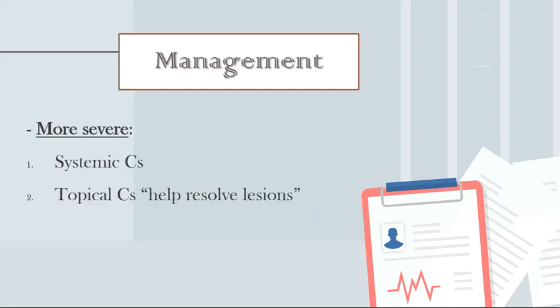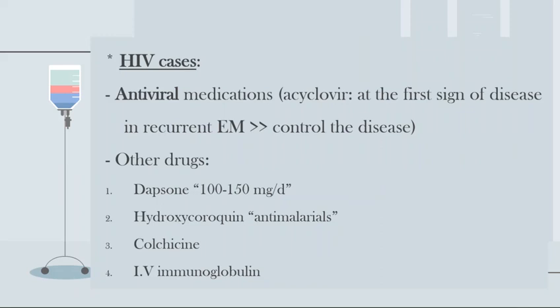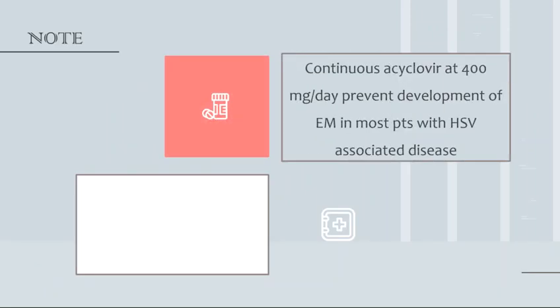For patients with more severe disease, I may prescribe systemic corticosteroids, and topical corticosteroids will help to resolve the lesions. For HSV-associated cases, the patient must be given antiviral medication — acyclovir — at the first sign of the disease. In recurrent erythema multiforme, other drugs that help modulate immunity can be prescribed, such as dapsone, antimalarials like hydroxychloroquine, colchicine, and intravenous immunoglobulin. Acyclovir 400 mg per day may also be prescribed.